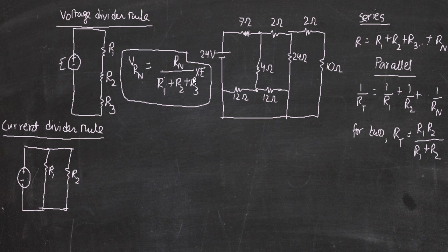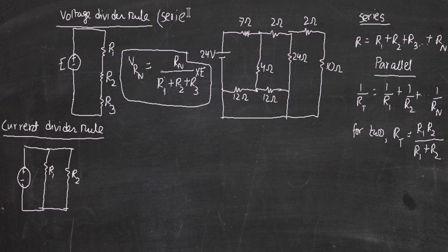For the current divider rule — you'll notice that the voltage divider rule applies when the circuit is in series format. Series is like side by side, and parallel is when resistors are across each other. The voltage divider rule works for series circuits when resistors are arranged in series, and the current divider rule works when resistors are arranged in parallel format.